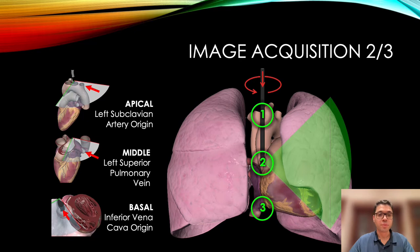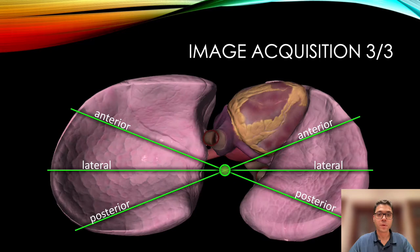The probe could be advanced to examine the middle lung regions, which correspond to the left superior pulmonary vein origin. The basal regions of the lungs would be examined by pushing the probe down to the inferior vena cava origin and again turning the probe clockwise, examining the left lung and then the right lung. At each of these three levels, images of the anterior regions, lateral regions, and posterior regions of both lungs could be acquired.